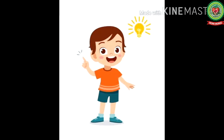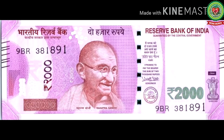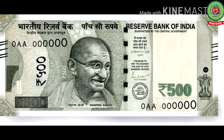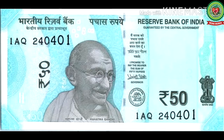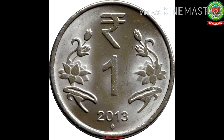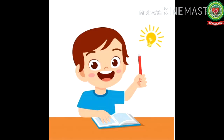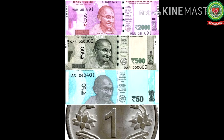Then suddenly I got an idea. I took out all the money from it. There was a two thousand rupee note, a five hundred rupee note, a note of fifty rupees, and a one rupee coin. I arranged the notes in order: first the two thousand rupee note, then the five hundred rupee note, then the fifty rupee note, and last the one rupee coin. Then I added the expanded number to get my total amount.